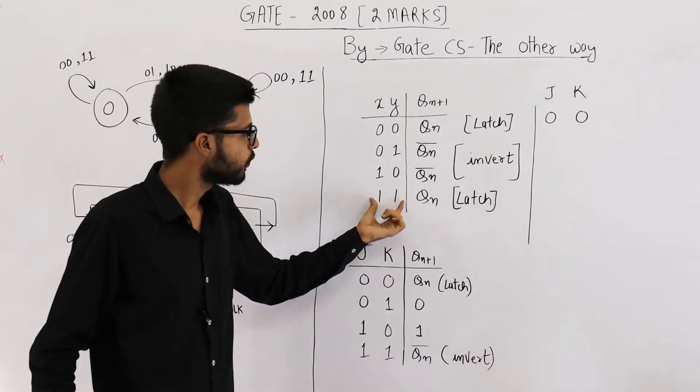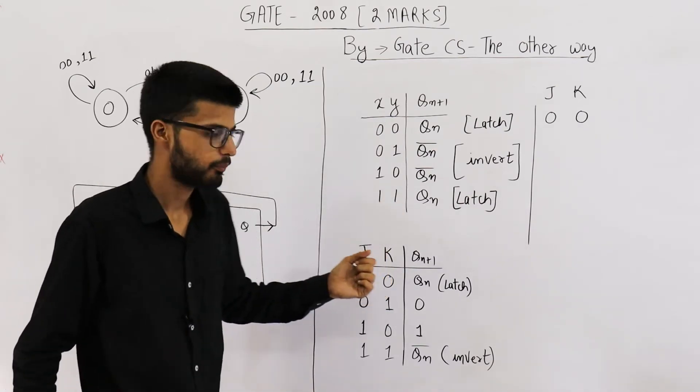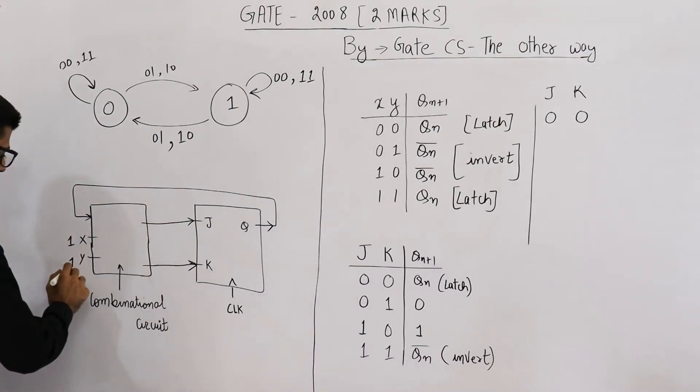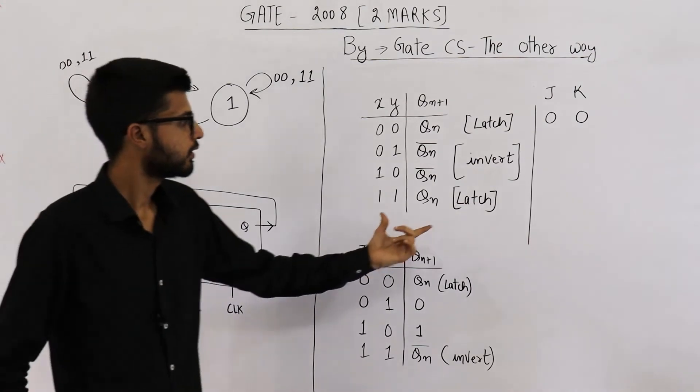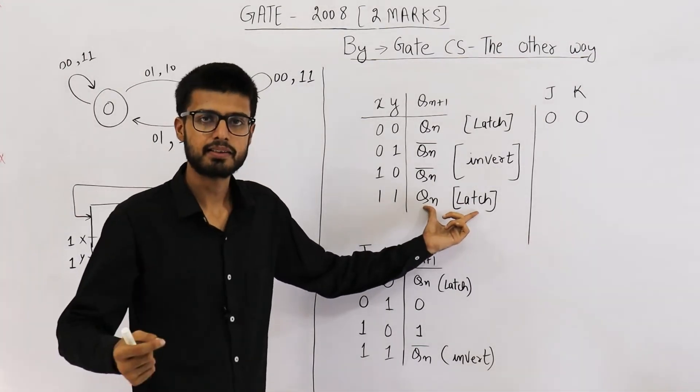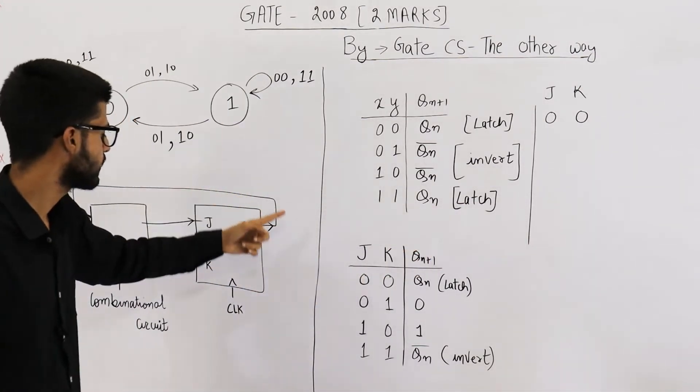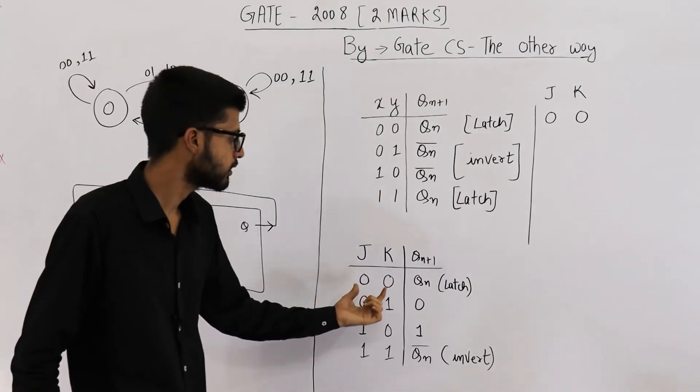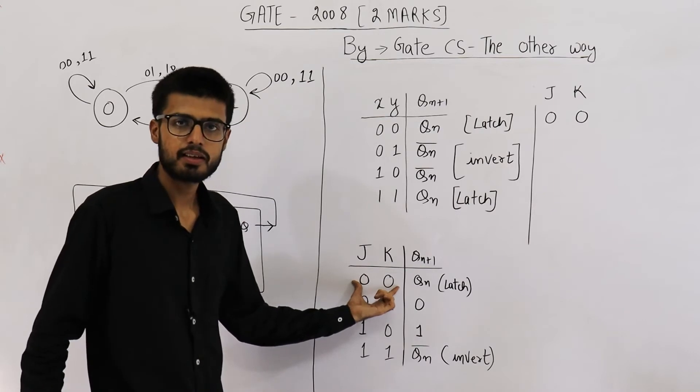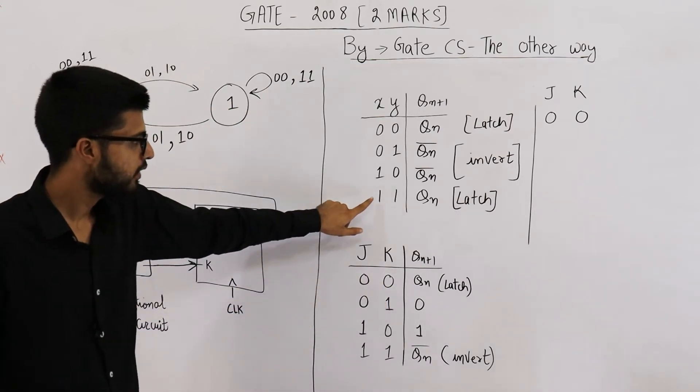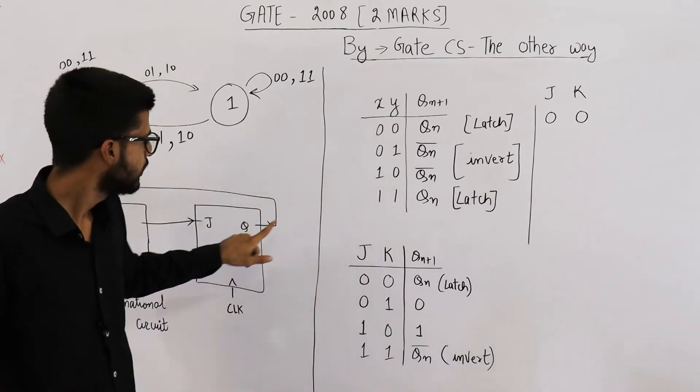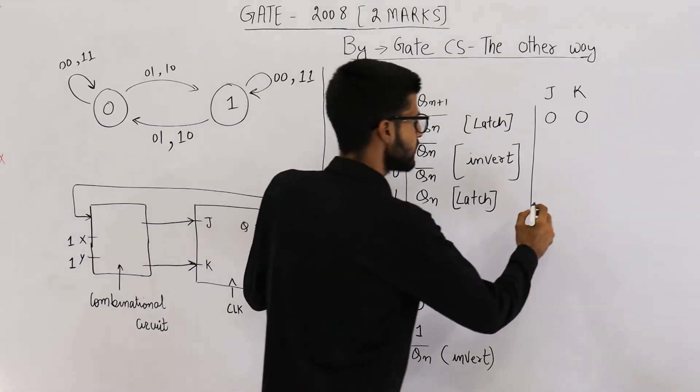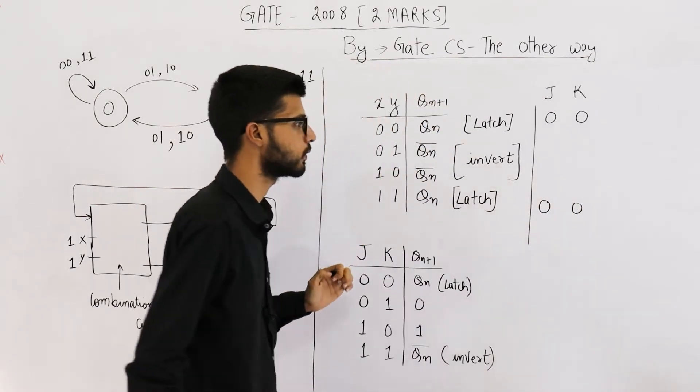Now when X and Y are 1,1 - see when we apply 1 and 1 here, we want that input must remain as it is in latch state. So this entire circuit must remain in latch state. But JK remains in latch state only when the inputs are 0,0. That means when we apply 1,1, this must get 0,0 to latch. In this case also, J and K must be 0,0 only.